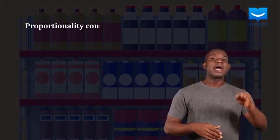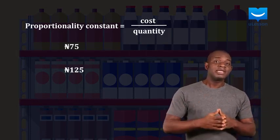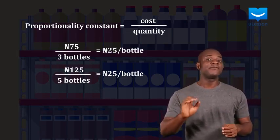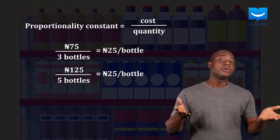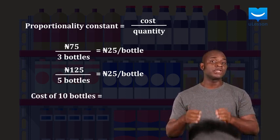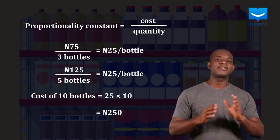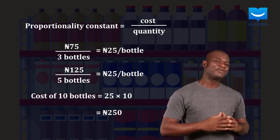We will get that by dividing cost by quantity. In both instances, we have 25 naira per bottle. So, to get the cost of 10 bottles, we simply multiply 25 by 10 to get 250 naira. That should be enough for now.